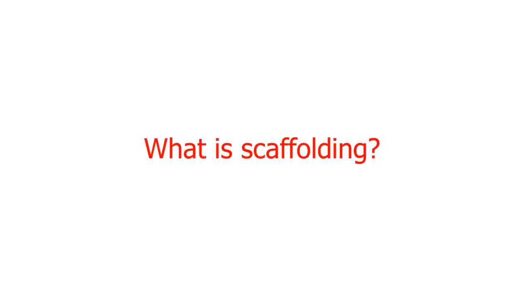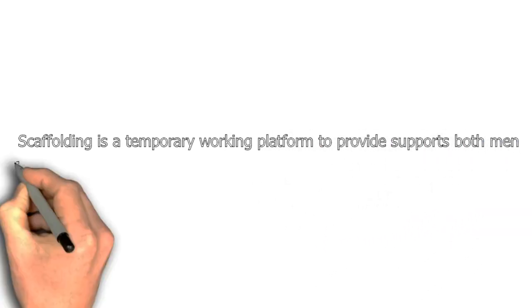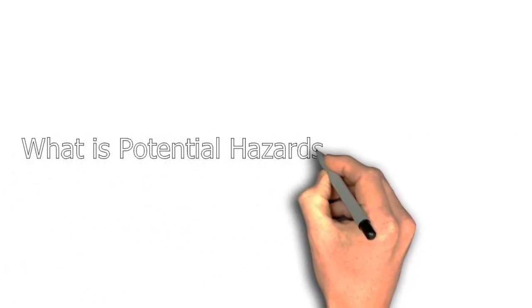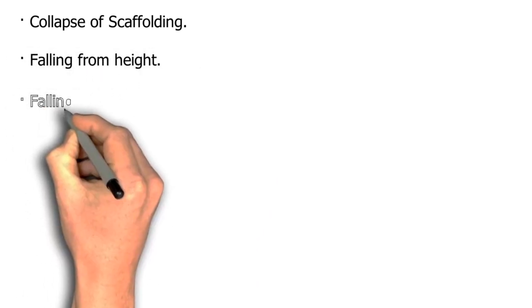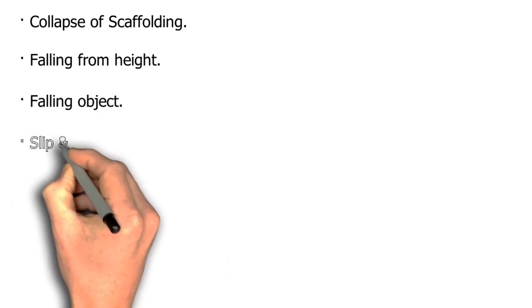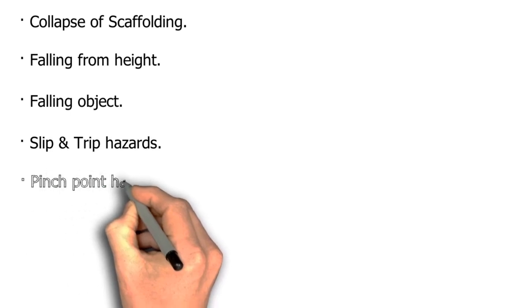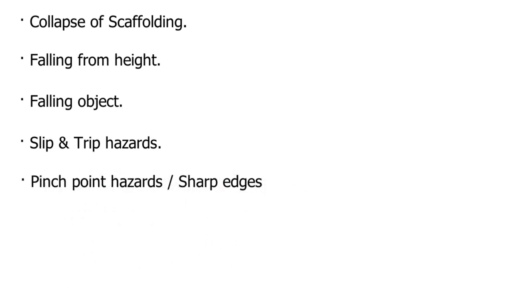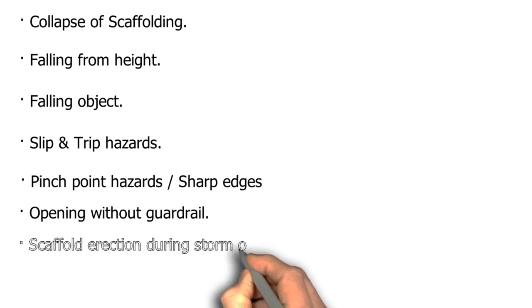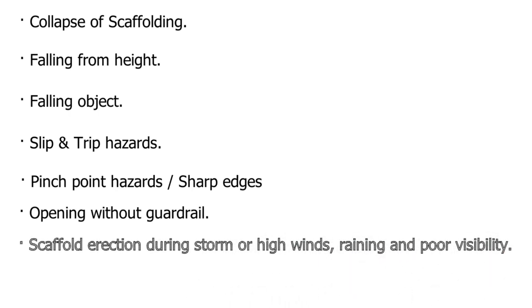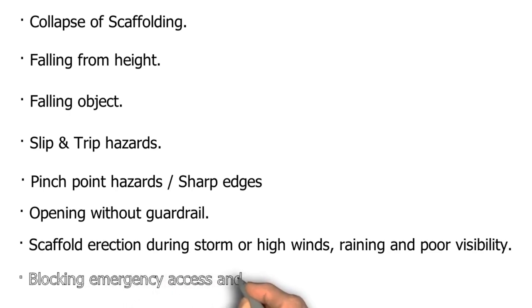What is scaffolding? Scaffolding is a temporary working platform to provide support for both men and materials for a working place. What are the potential hazards of scaffolding? Collapse of scaffolding; falling from height; falling objects; slip and trip hazards; pinch point hazards and sharp edges; openings without guardrails; scaffold erection during storm, high winds, rain and poor visibility; blocking emergency access and walkways.